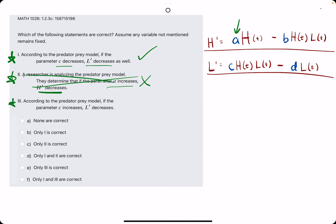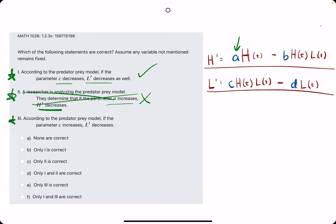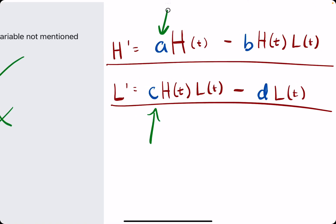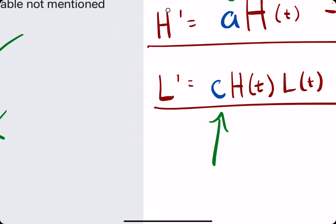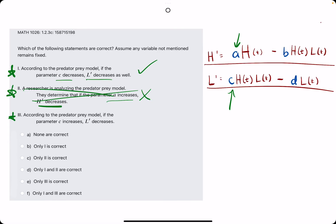Number 3. According to the model, if parameter C increases, then L' decreases. Again, if C goes up, then L' would also go up. And so, they're saying just the opposite of number 1. So, this is a false statement.